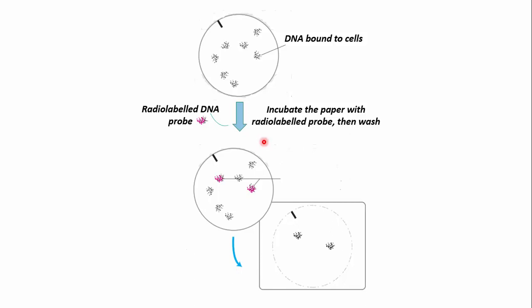Then we will wash the filter paper to remove the unbound radioactive particles. After that, we expose the filter paper to the X-ray film by the method called autoradiography. The colonies that appear after autoradiography are known as autoradiogram.